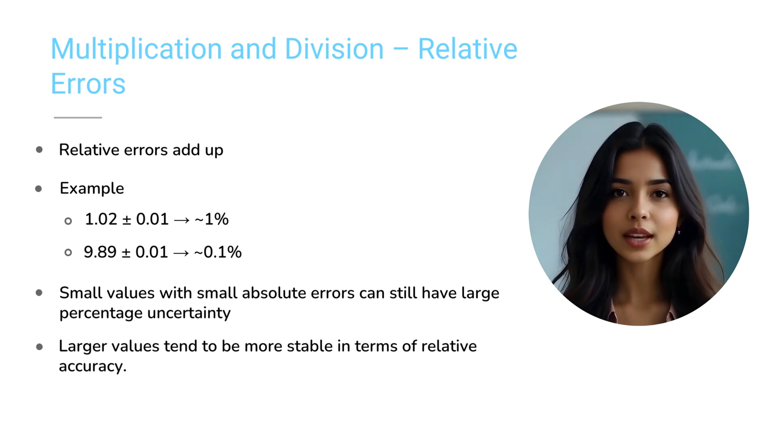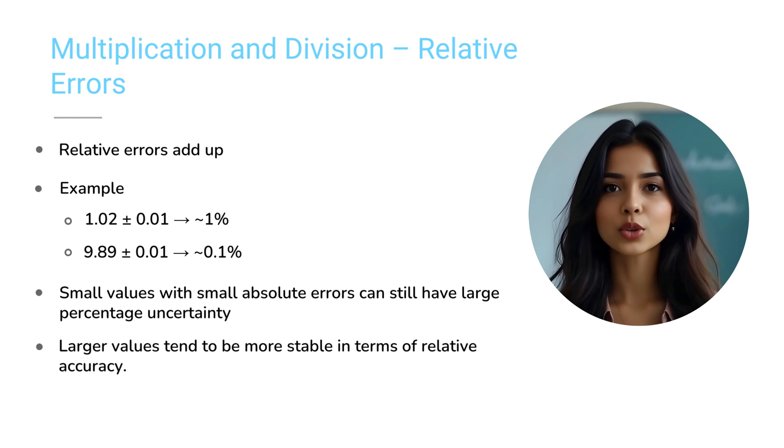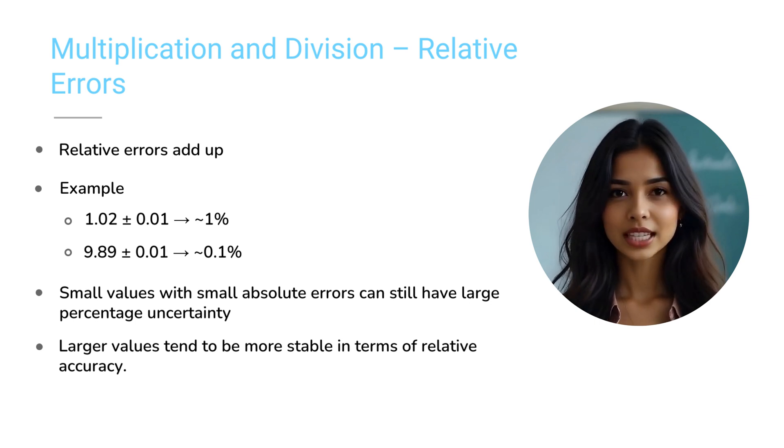Did you notice something? Even though both have the same absolute error, the relative error is much higher for the smaller mass. That's because smaller values are more sensitive to even tiny errors.